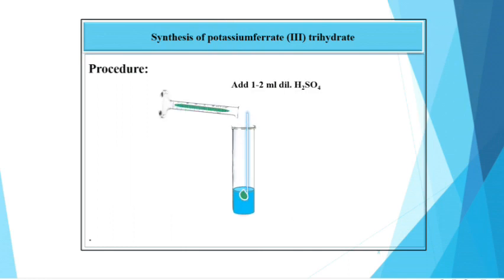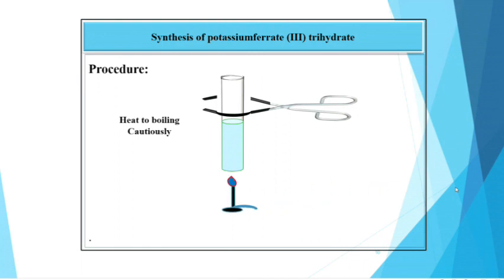Now, to this solution, add 1 to 2 ml dilute H2SO4 with constant stirring and then add 10 ml 10% oxalic acid with constant stirring. Now, heat this solution very cautiously on low flame and then cool it well.